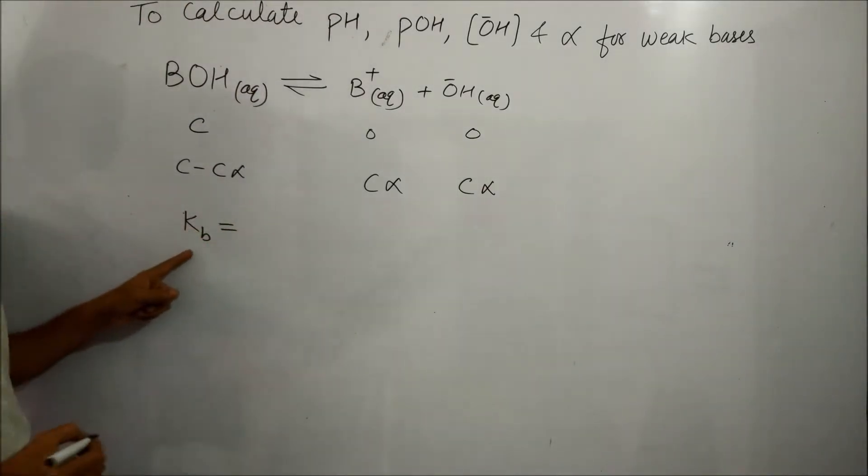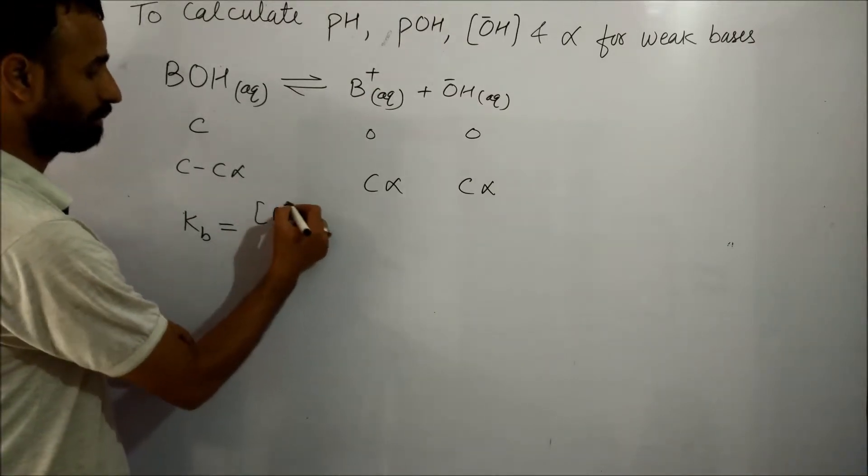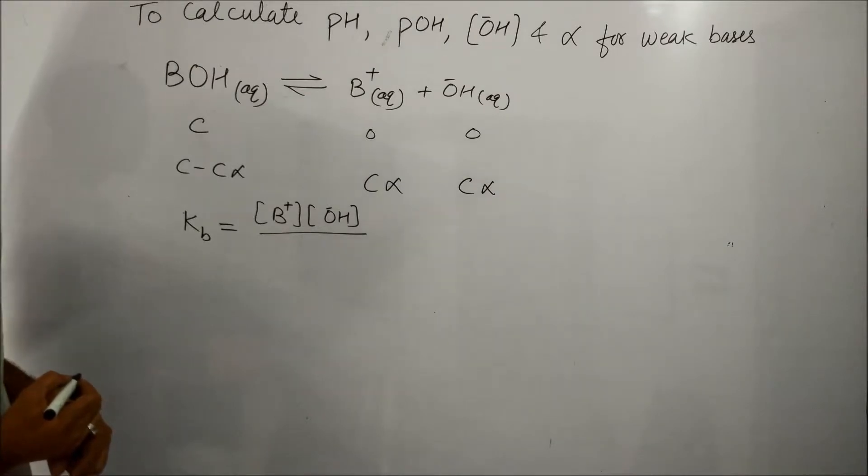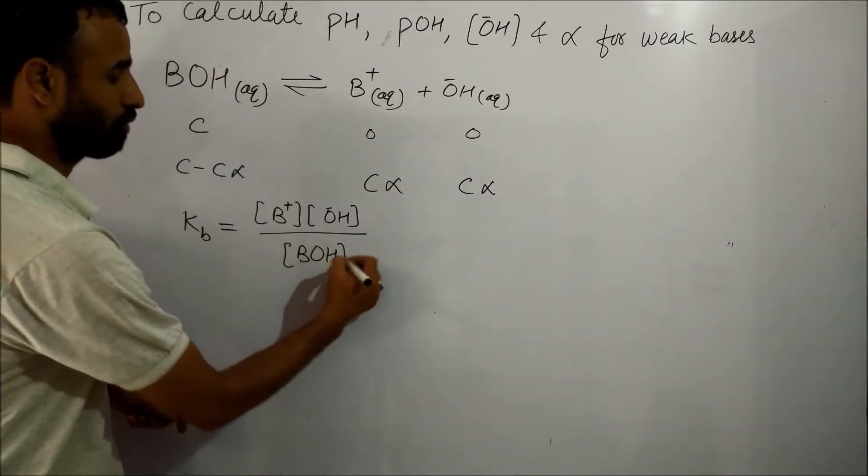So, the dissociation constant of the base, KB, is equal to B⁺ ion concentration times OH⁻ concentration divided by BOH concentration.